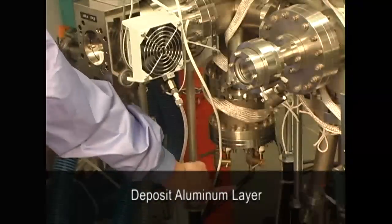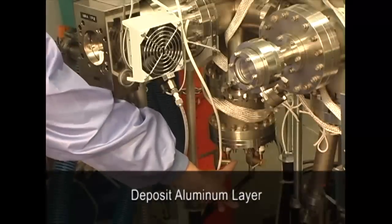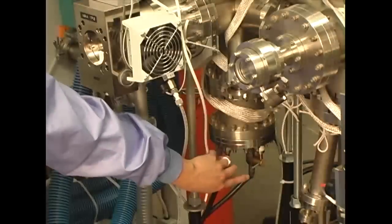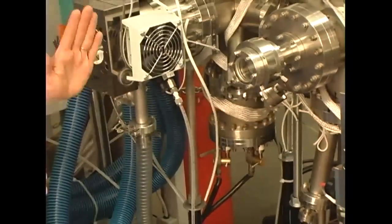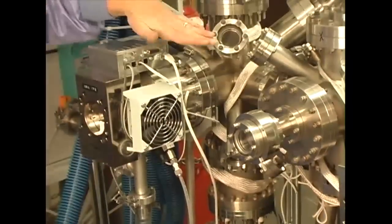The deposition of the aluminum layer is very similar to the organic deposition. Two leads supply current to the boat containing aluminum. The aluminum moves up through the chamber, spreads out, and is deposited on the substrate through the mask.